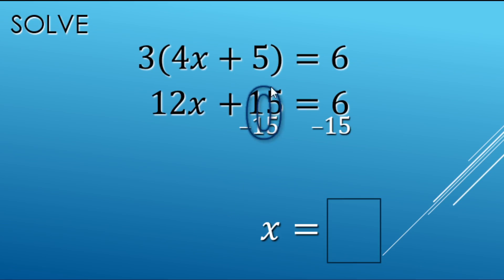So that's going to give us zero, 15 minus 15 is zero. So just a 12x on the left side equals six minus 15 makes a negative nine.